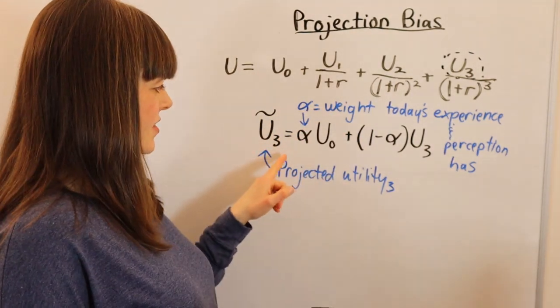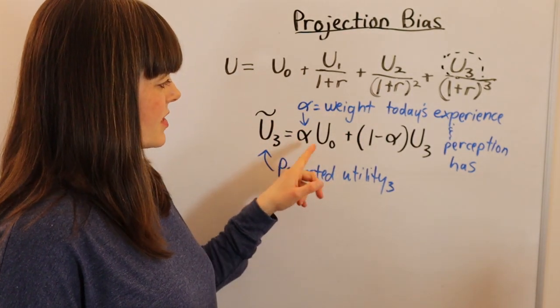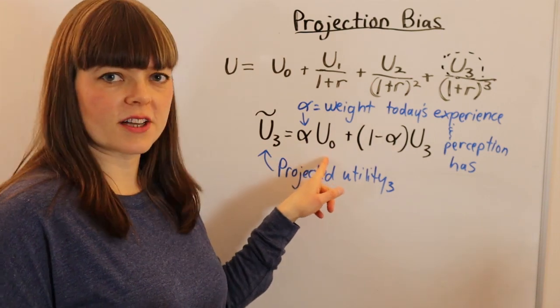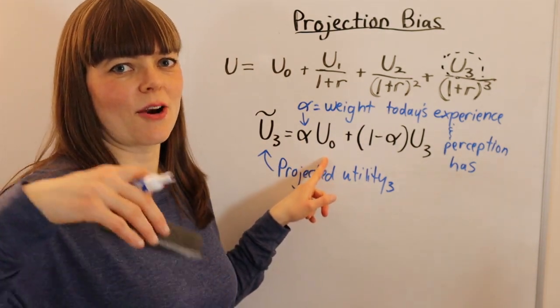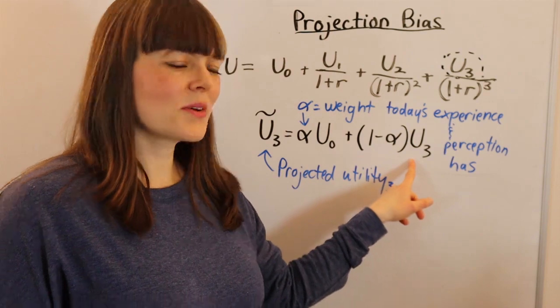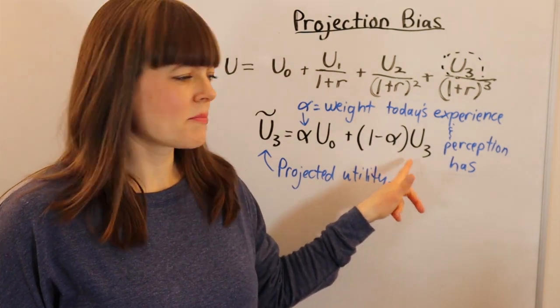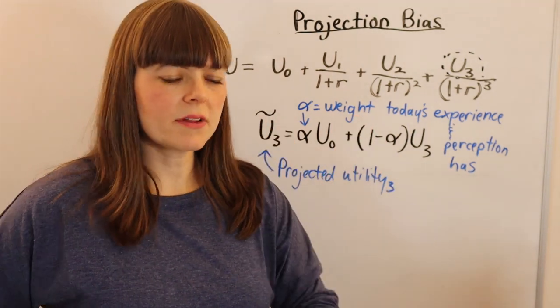Projected utility in period 3 is some combination of our utility today, our experiences and preferences today, and our actual utility in period 3. Let me give you some examples of this. One is the It Gets Better campaign.